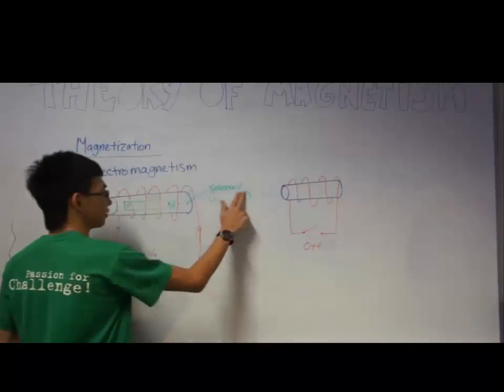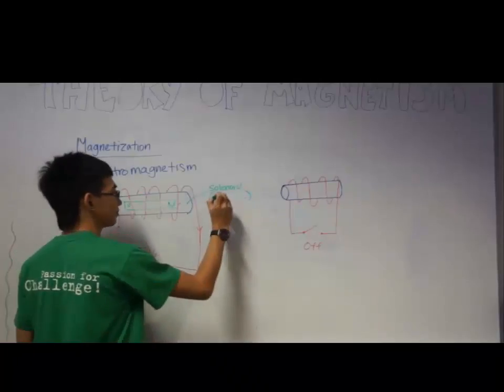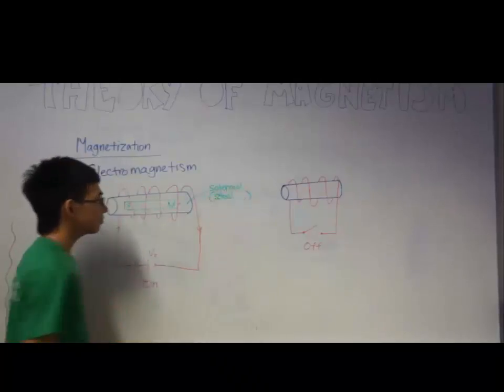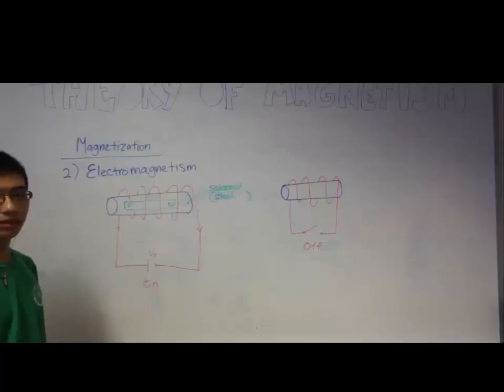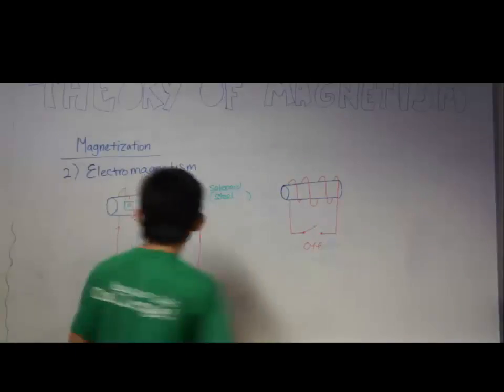In fact, what about if this is steel? Let's say this is steel. When the current is off, the steel will retain its magnetism and become a permanent magnet because steel retains its magnetism more than soft iron.